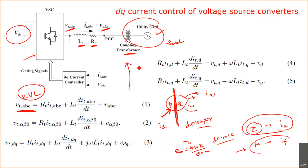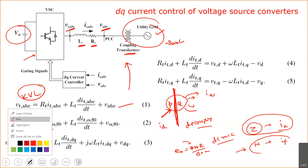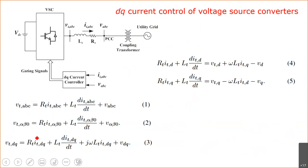The KVL equation is V_T(ABC) = R_T·I_T(ABC) + L_T·dI/dt + V_s(ABC). We need to convert this into the alpha-beta reference frame and then into the DQ reference frame. You can directly convert to the DQ reference frame.